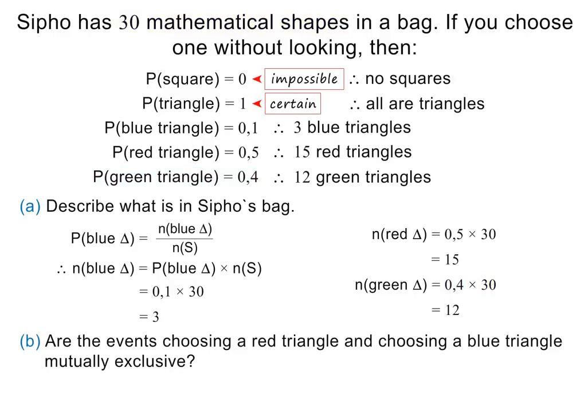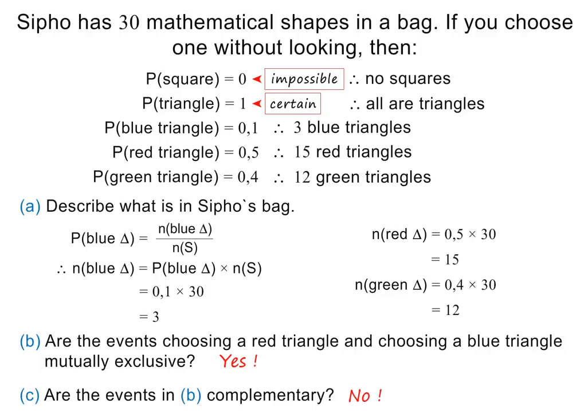In part B, we are asked whether choosing a red triangle and choosing a blue triangle are mutually exclusive. The answer is yes, because a triangle cannot be blue and red at the same time. In part C, we are asked whether these two events are complementary. The answer is no, because we also have green triangles in the bag. This completes the lesson. Good luck with the test!